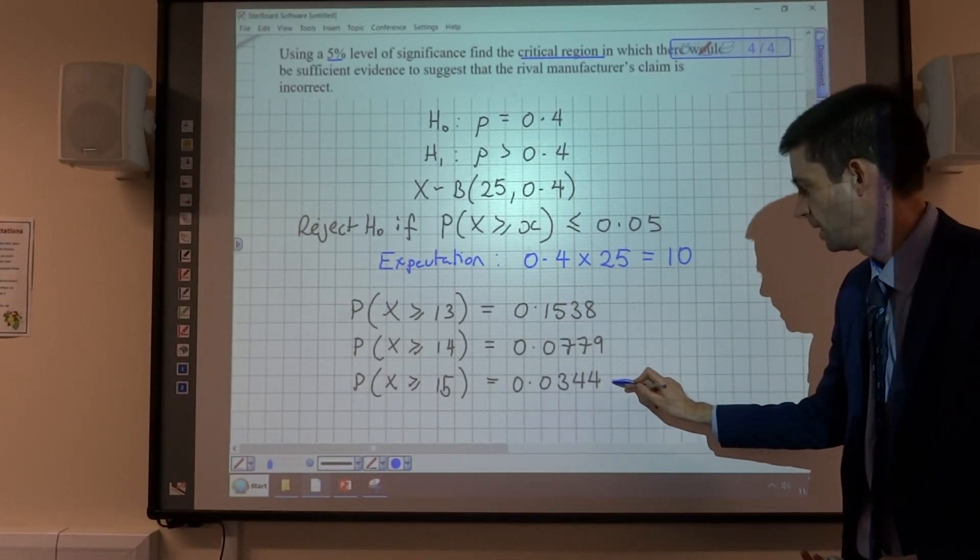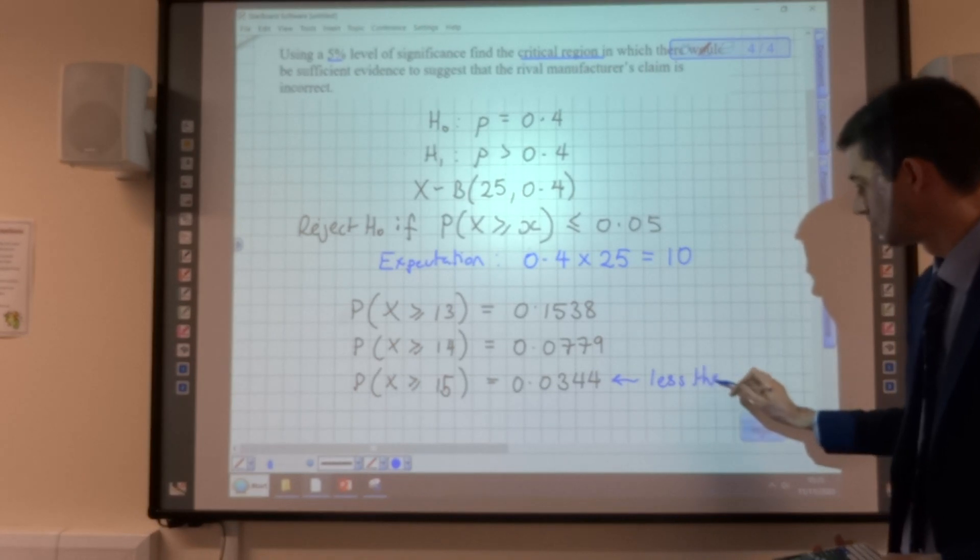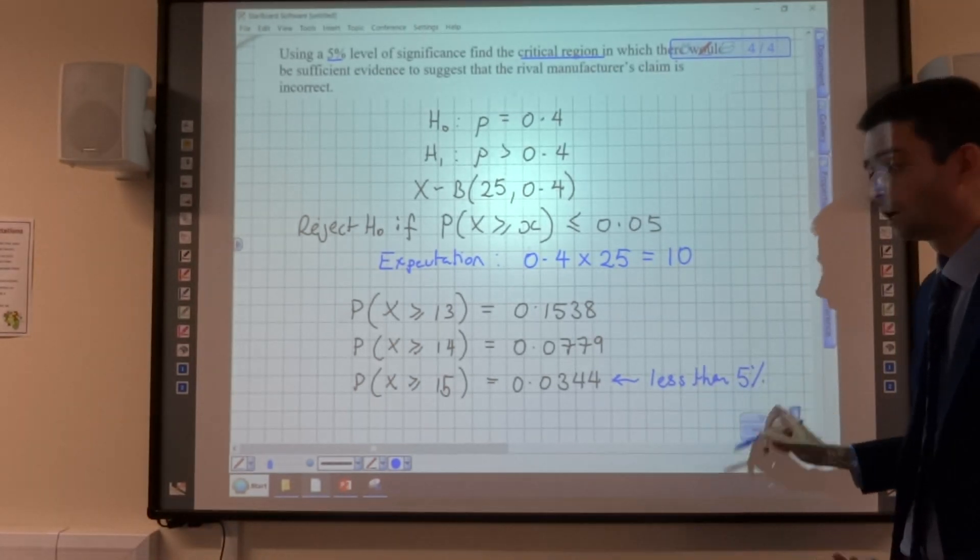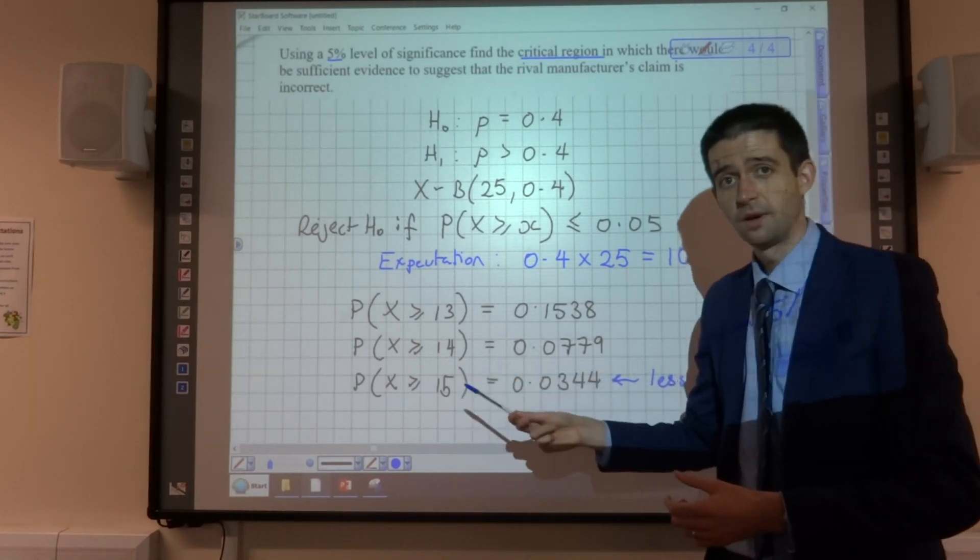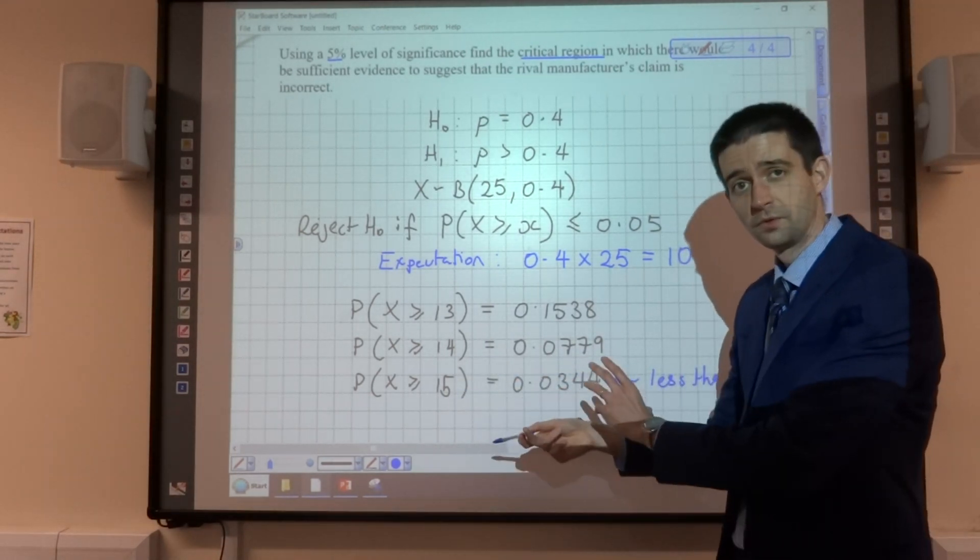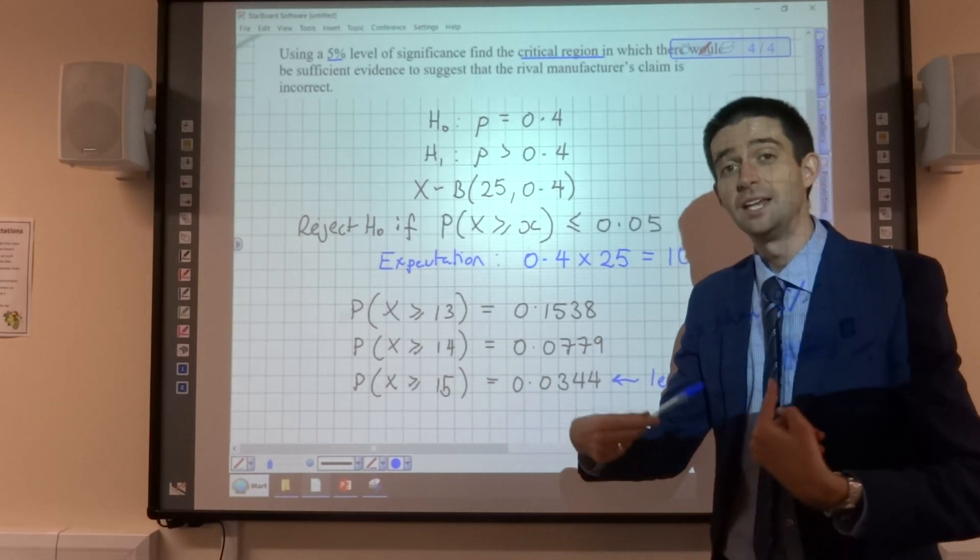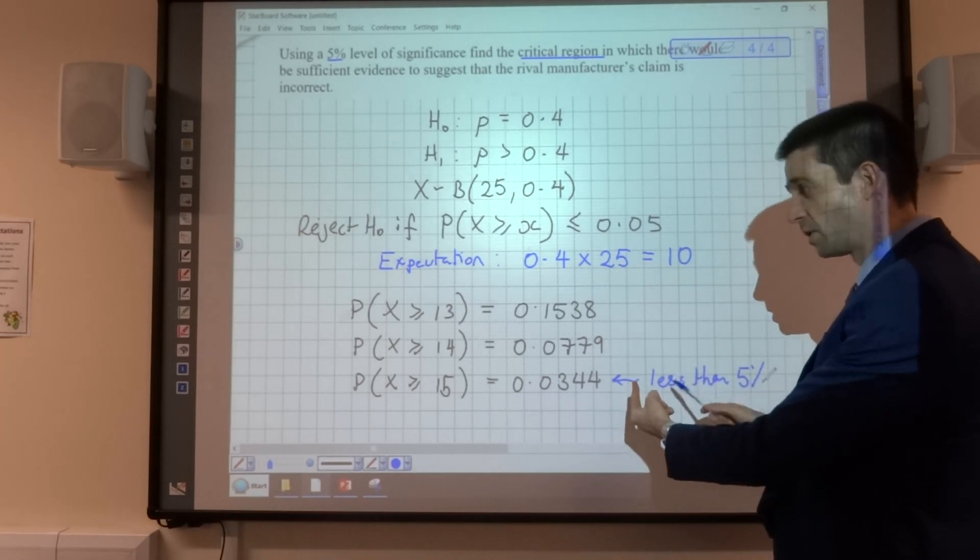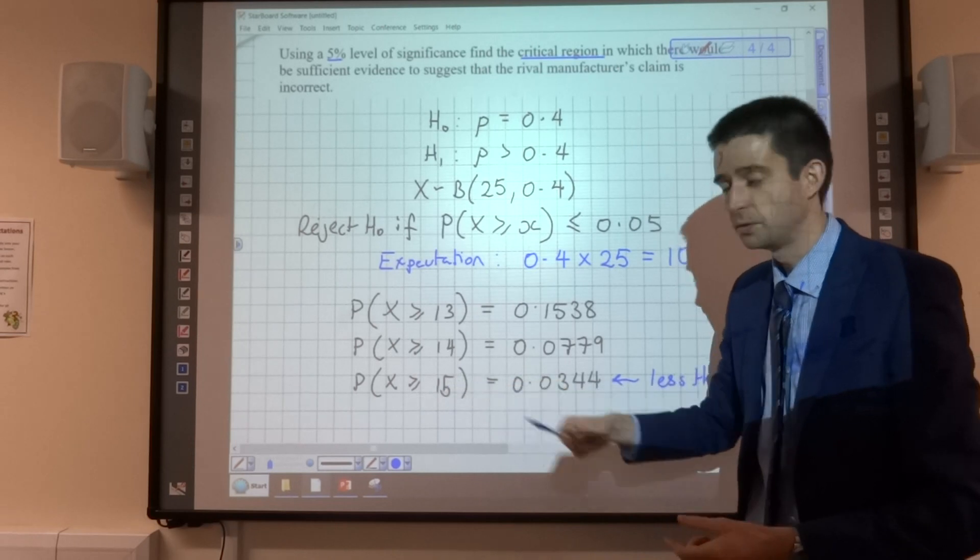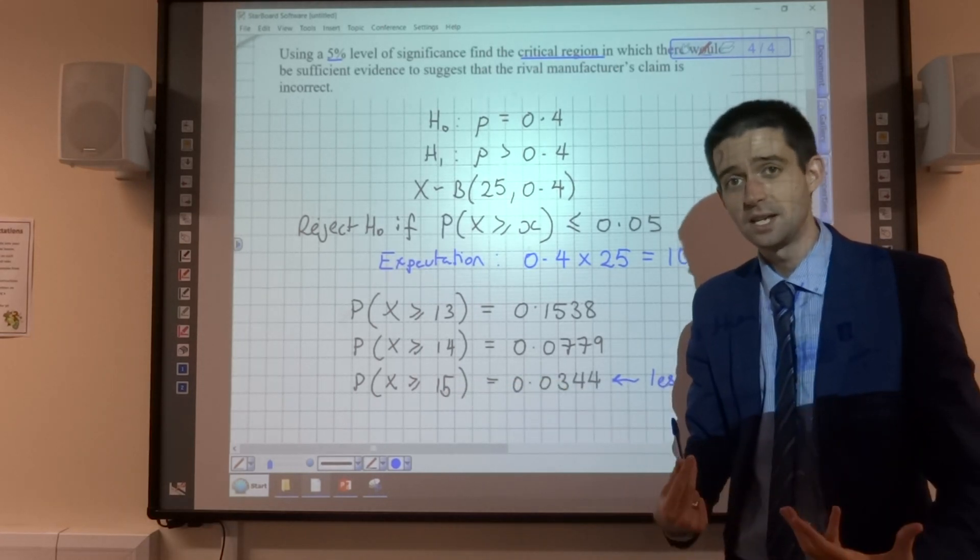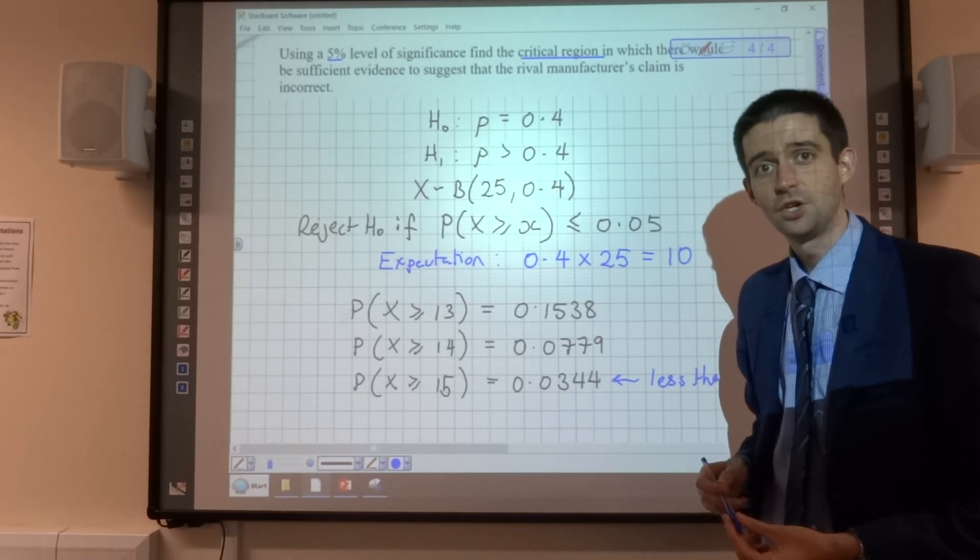Now, this value here is the first value that is less than our significance level of 5%. So what that means is if in my sample of 25 dogs, 15 or more of them preferred the Woof-tastic brand, the probability of that happening is low enough that it's less than my significance level, and I could reject my null hypothesis, because that number of dogs preferring it is unlikely enough that it causes me to doubt this initial probability.